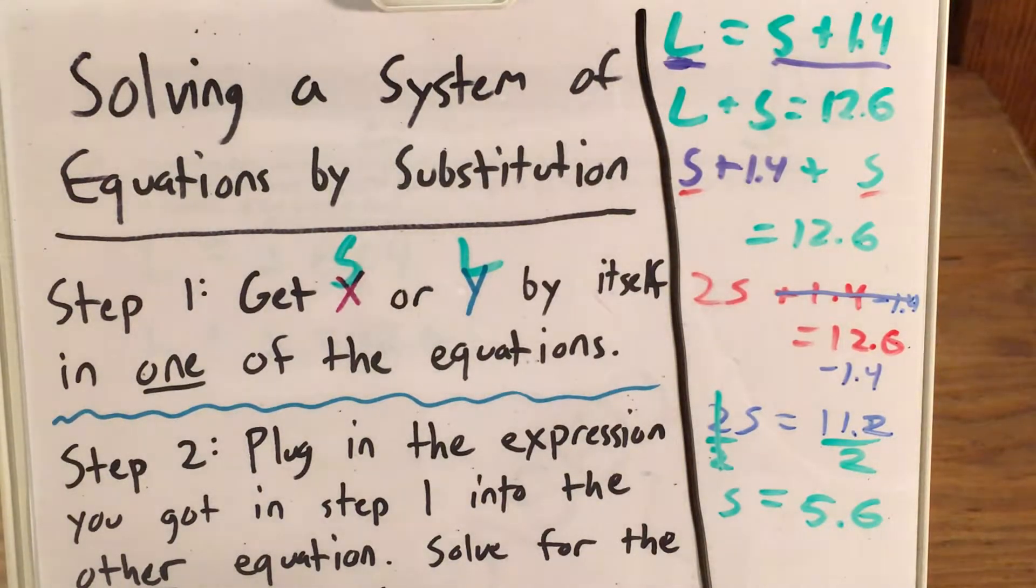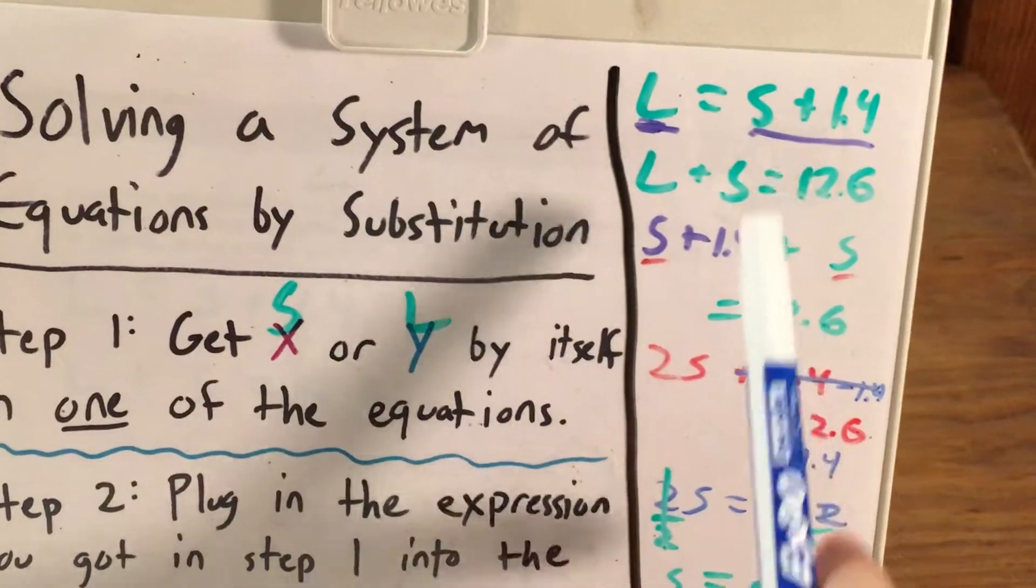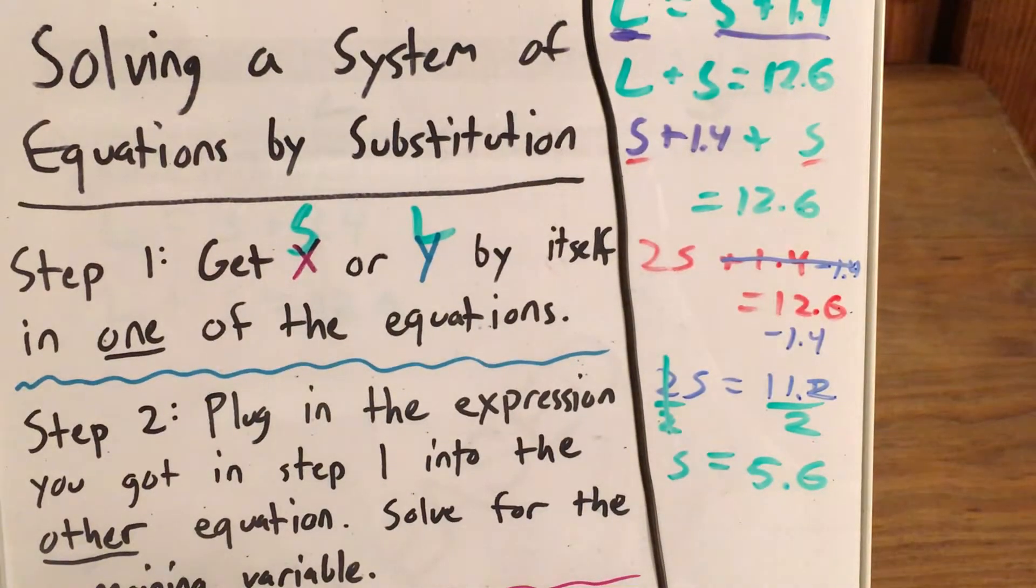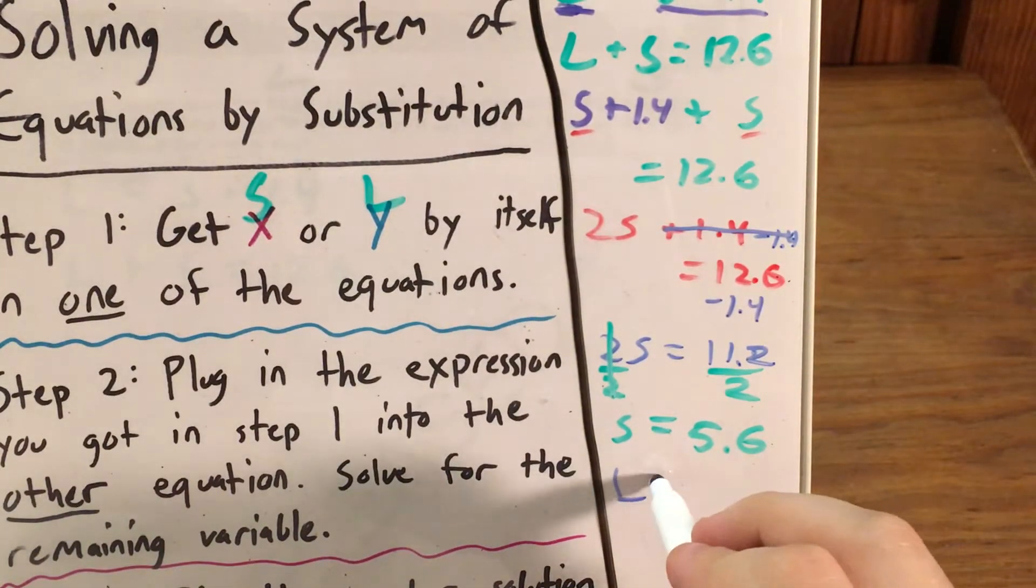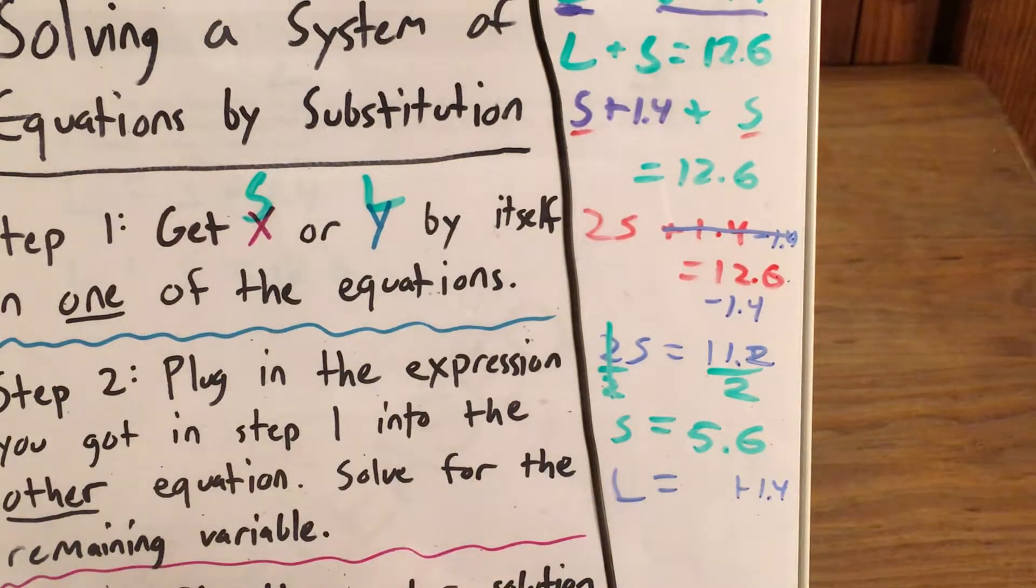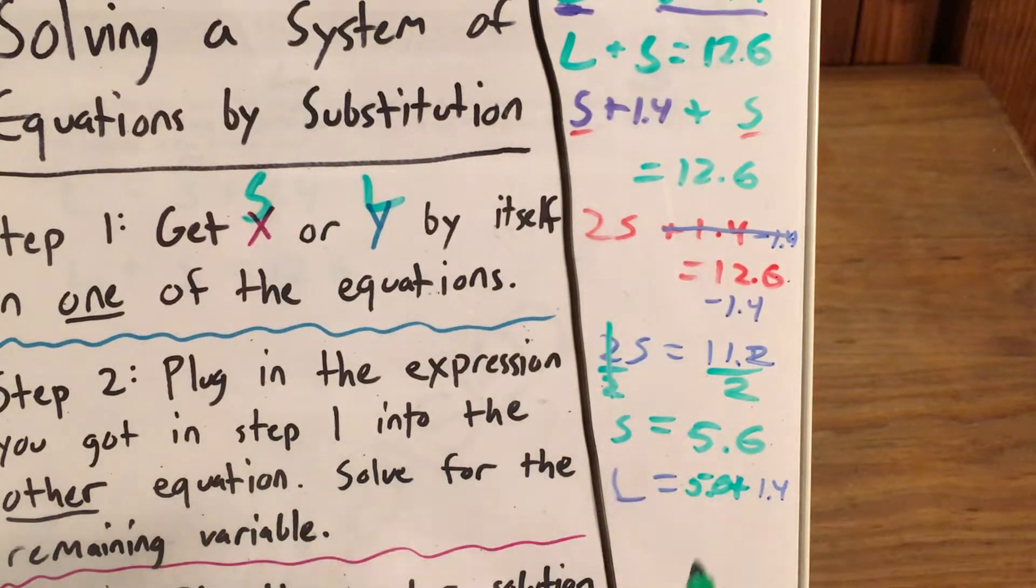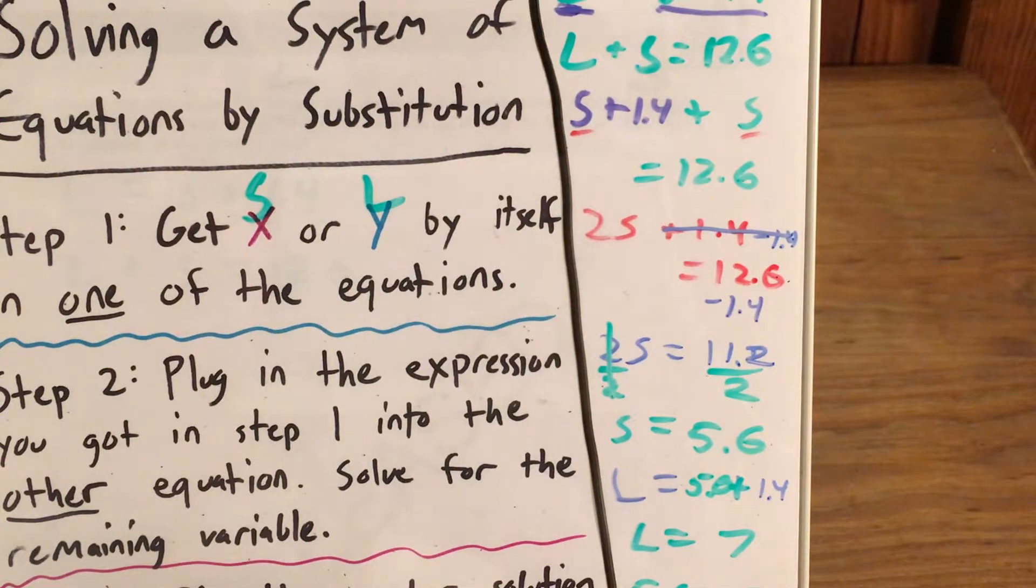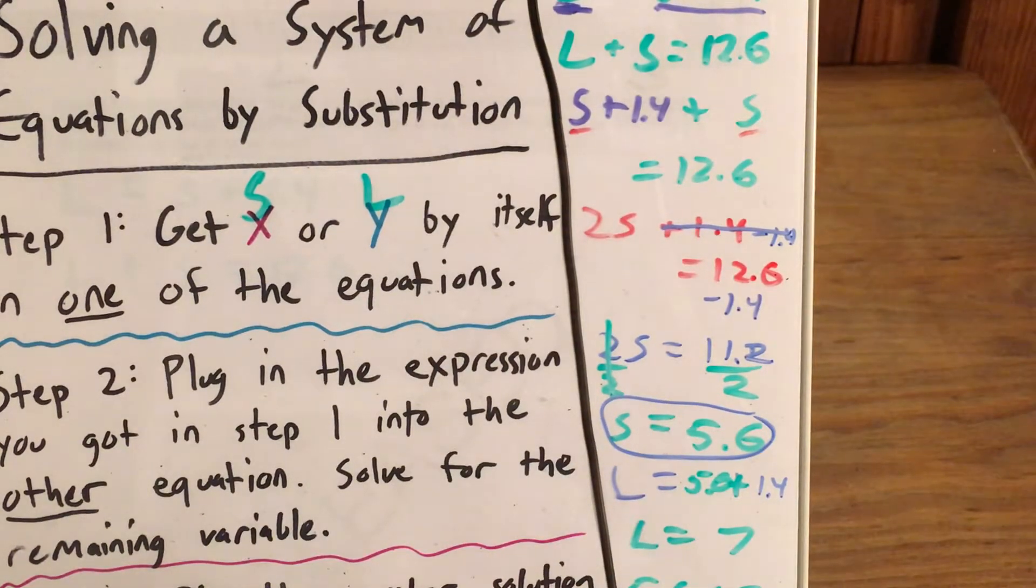Now just to make sure that this works, I'll actually finish up with step three, which is where I take this number, plug it back in, and make sure that I get it for that equation. I'll test the ordered pair of the two weights. So if the large dog equals 5.6 plus 1.4, large dog would just be 7 pounds. And then if I add the weight of the two dogs, 5.6 plus 7 does get me 12.6.